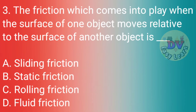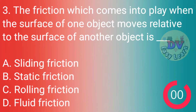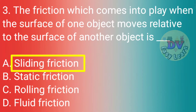Q2. Which material do gymnasts apply on their hands to increase friction for better grip? Q3. The friction which comes into play when the surface of one object moves relative to the surface of another object is? Correct answer: Sliding friction.